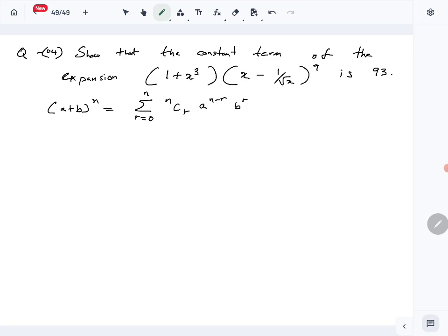So then we know from this, the common term of this expansion is given by, the R plus one term of this binomial expansion is given by NCR, A raised to n minus R, B R.